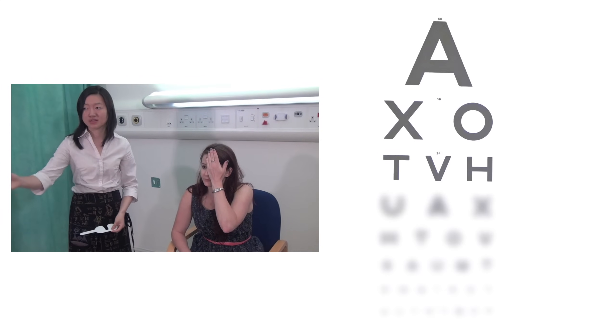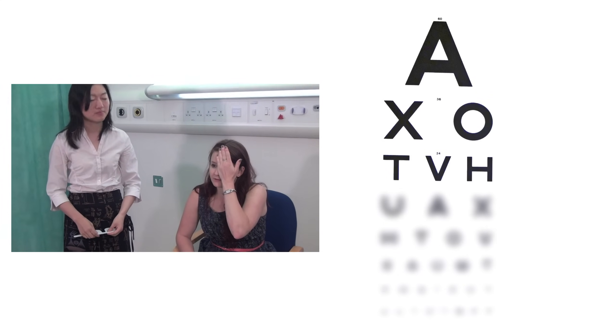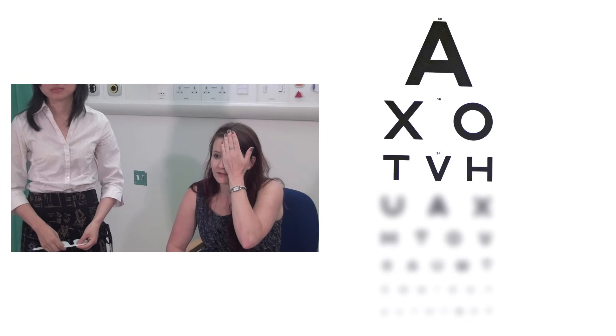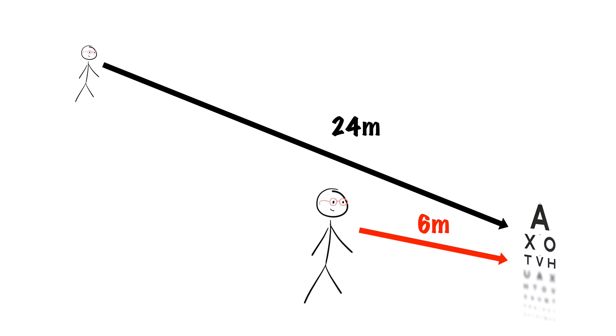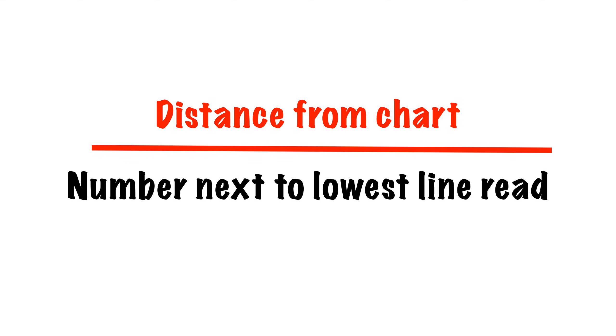Ask the patient to cover their left eye first with the palm of their hand and read down the chart to the lowest line they can. There is a number beside the line — in this case it's 24. This means they can only see at six metres what they should be able to see at 24 metres. We record the visual acuity as the distance from the chart over the lowest line read, so in this case 6/24.